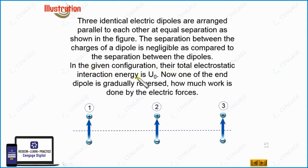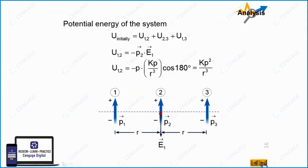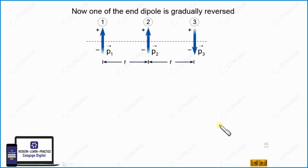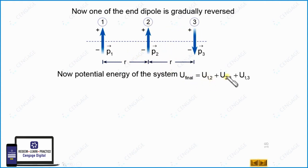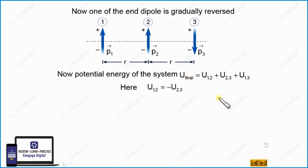Now one of the end dipoles is gradually reversed — let us reverse dipole number 3. The potential energy is again U12 + U23 + U13. Dipoles 1 and 2 are parallel, but dipoles 2 and 3 are anti-parallel with the same magnitude P and same separation r. That means U12 and U23 have the same magnitude but opposite signs, so they cancel. The total potential energy of the system equals U13 only.